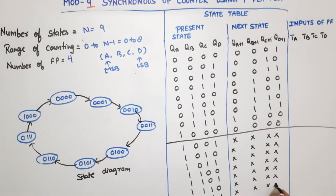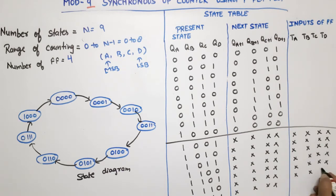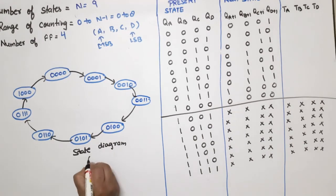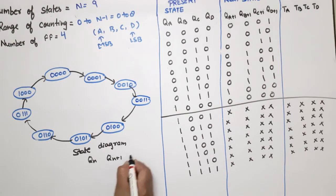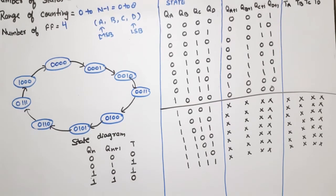Now I will mention all T input values. When using T flip-flops, we need the T excitation table. The rule is: if present state and next state are both the same, T is 0. If they change (0 to 1 or 1 to 0), T is 1. So these four combinations are clear: same states give T=0, different states give T=1.